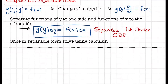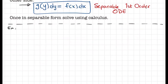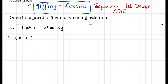So we have the following example: (x² + 1) times y-prime equals x times y. This is our example. The first step is we want to rewrite everything — that y-prime we want to rewrite as dy/dx, so we have (x² + 1) times dy/dx equals x times y. After this, we continue and separate things to both sides. We have (x² + 1) dy, and we multiply both sides by dx to get x·y dx.